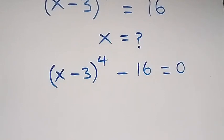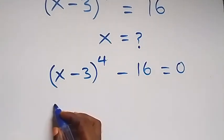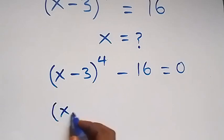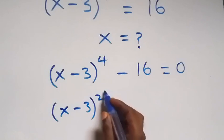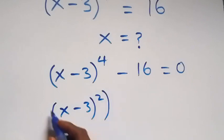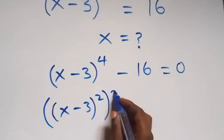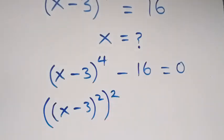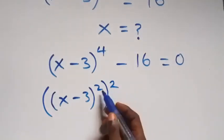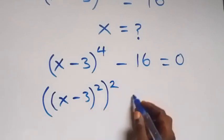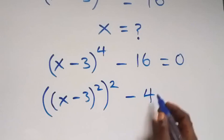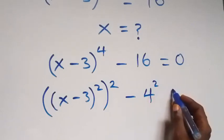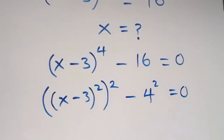Then from here we can rewrite this as x minus 3 raised to power 2, and everything raised to power 2. From the law of indices, when the powers are multiplied, we can write this as (x minus 3 squared) squared, minus 4 squared, equals to 0.